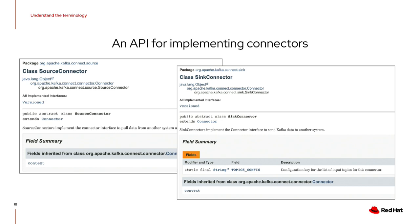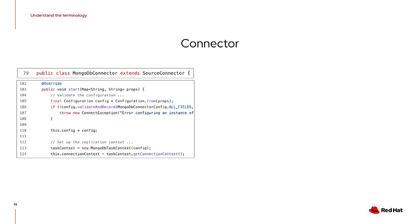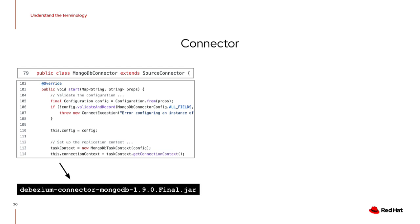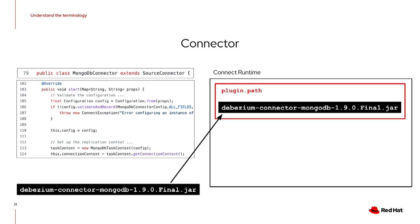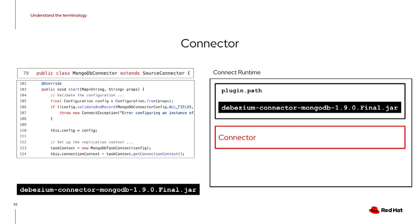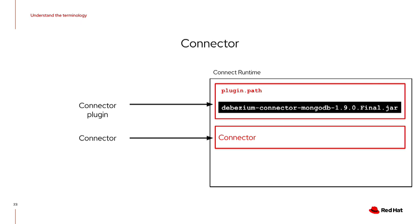We have Kafka Connect as a runtime and an API, and then we have the actual connectors — code that has implemented the Connect API to get data from or into an external system. We also use the term 'connector' to refer to the packaged jar file, the installed plugin in the runtime, and the running process. When the connector is installed into the runtime, we call it the connector plugin. When it's actually running, it's the connector. Connector plugins are loaded using the service loader mechanism in Java. The other key term is 'task' — the actual thing that connects to the external system and flows the data; the connector's main job is to spin up tasks.